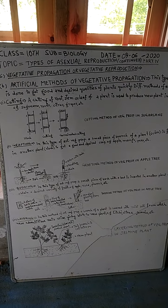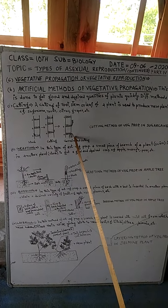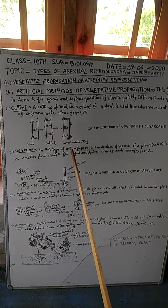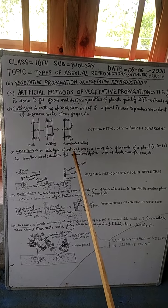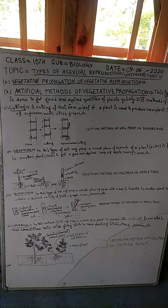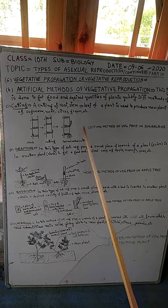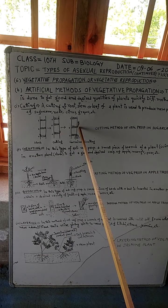It is sown in the soil. Here you see that from the nodes these roots arise which grow in the soil while this shoot arises from